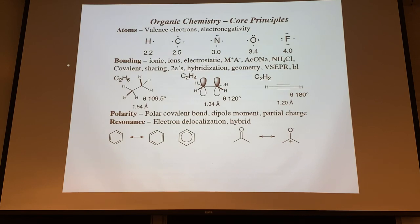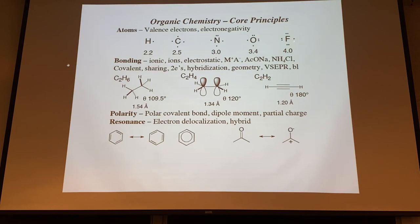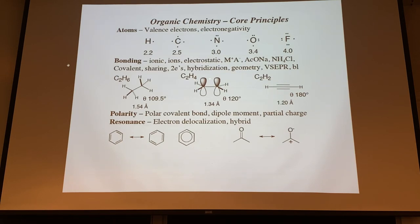Don't try to brute force memorize everything - nobody has a good enough memory for that. Rely on the principles. Think about valence electrons and electronegativity - the propensity of an atom to pull electrons toward itself. The Pauling scale goes from zero to four; fluorine is the most electronegative atom because it wants one more electron for the octet. Carbon and hydrogen are in the middle, which is partly why carbon compounds are so stable and flexible.